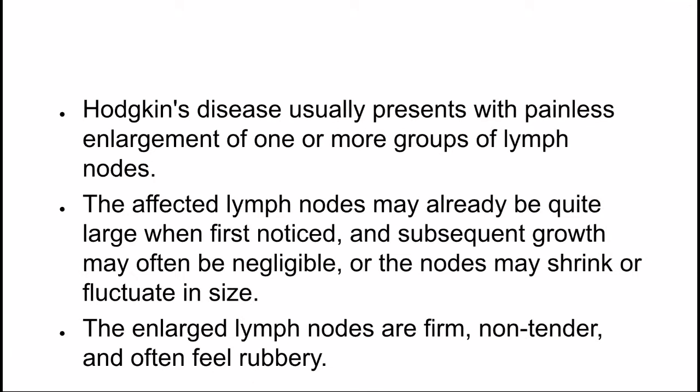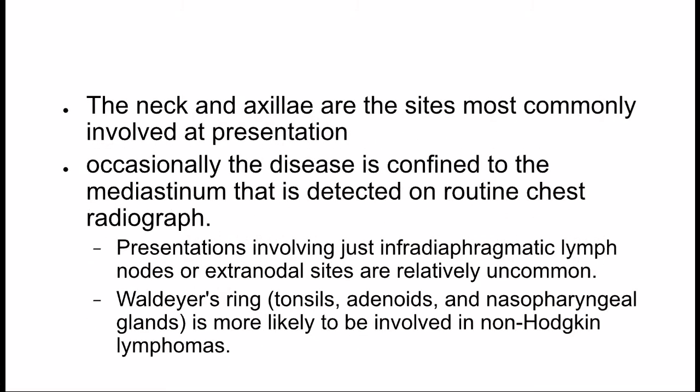Clinical features: The disease typically involves one or more groups of lymph nodes. The affected lymph nodes may already be quite large when first noticed, and subsequent growth may often be negligible, or the nodes may shrink or fluctuate in size. The enlarged lymph nodes are firm, not tender, and often feel rubbery. The neck and axillae are the sites most commonly involved at presentation. Occasionally, the disease is confined to the mediastinum and is detected on routine chest radiograph. Presentations involving just infradiaphragmatic lymph nodes or extranodal sites are relatively uncommon.